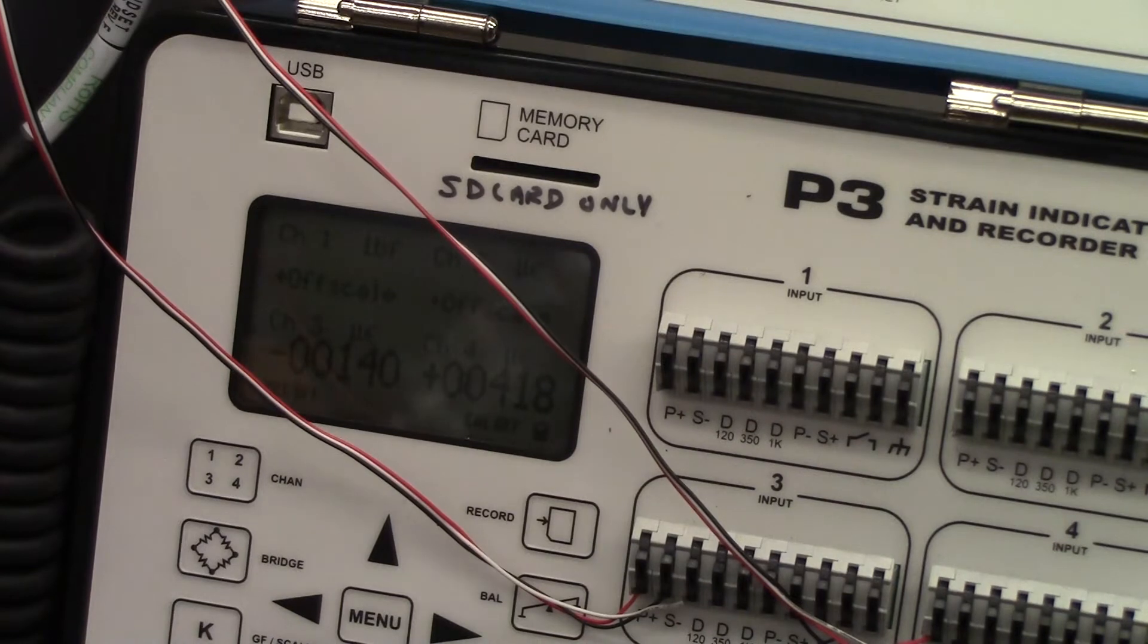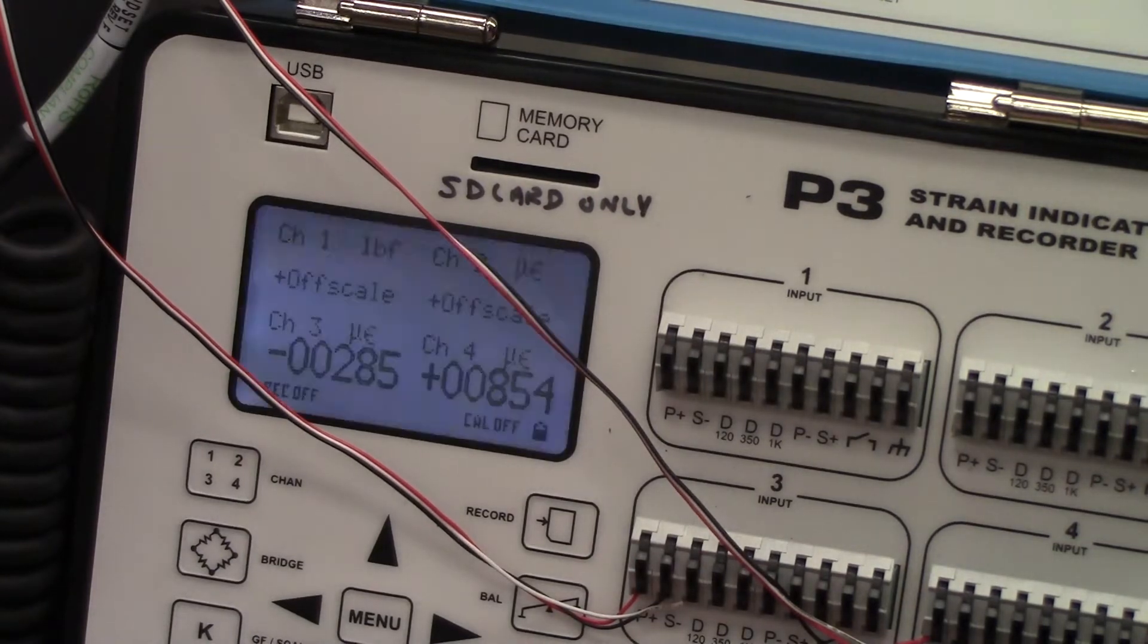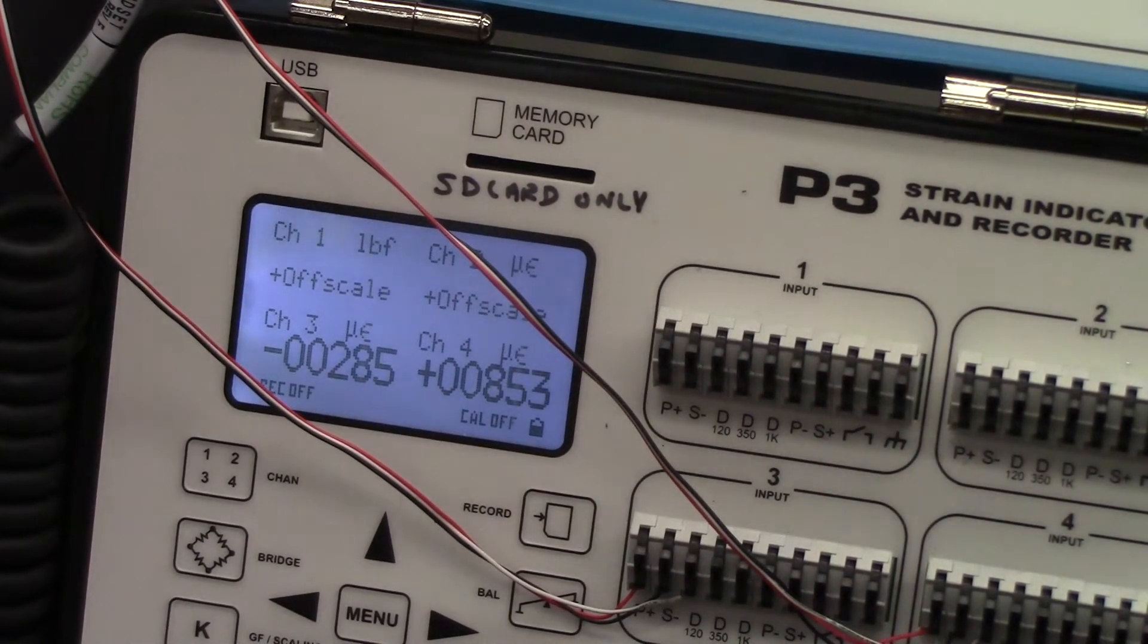Just go ahead and do the other ones. Let's go to 1,000 pounds. And this is like nearly 1,000 pounds. So minus 285 and 852 microstrain.